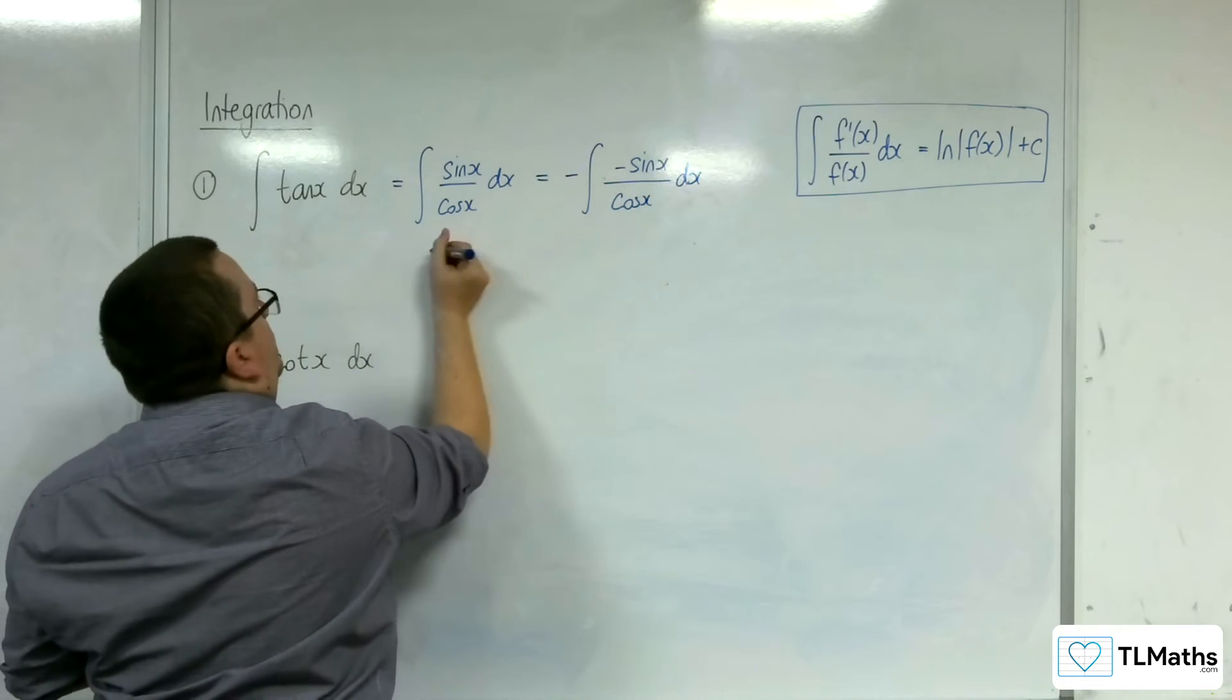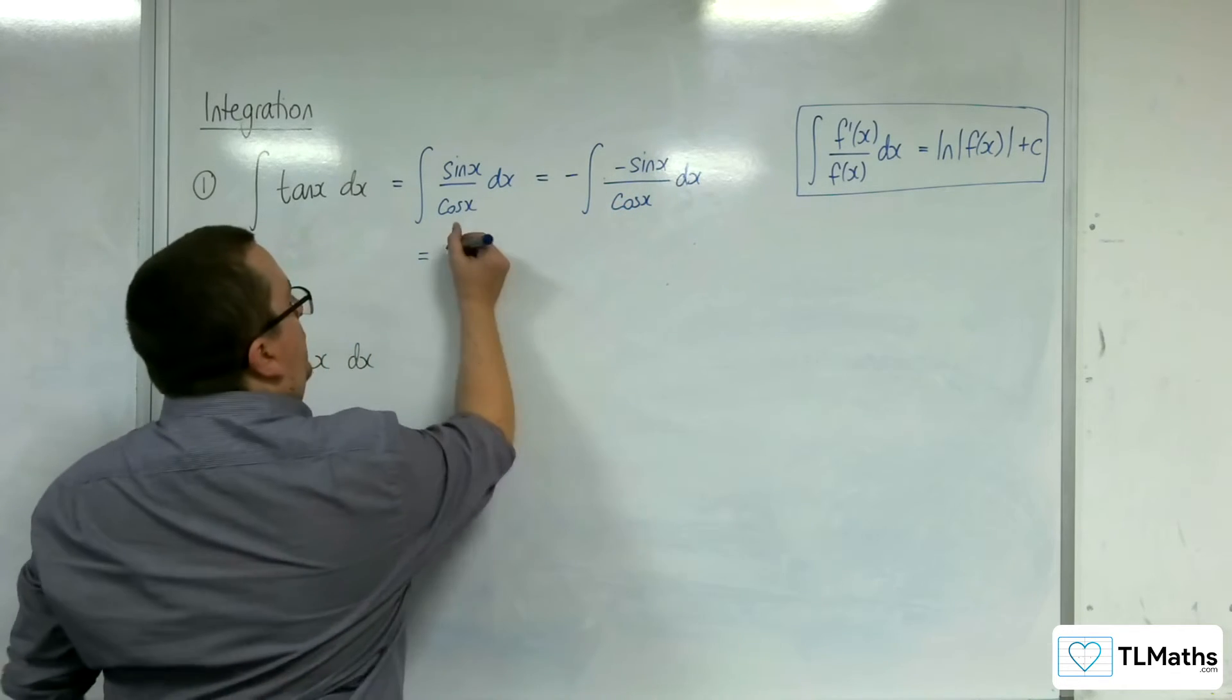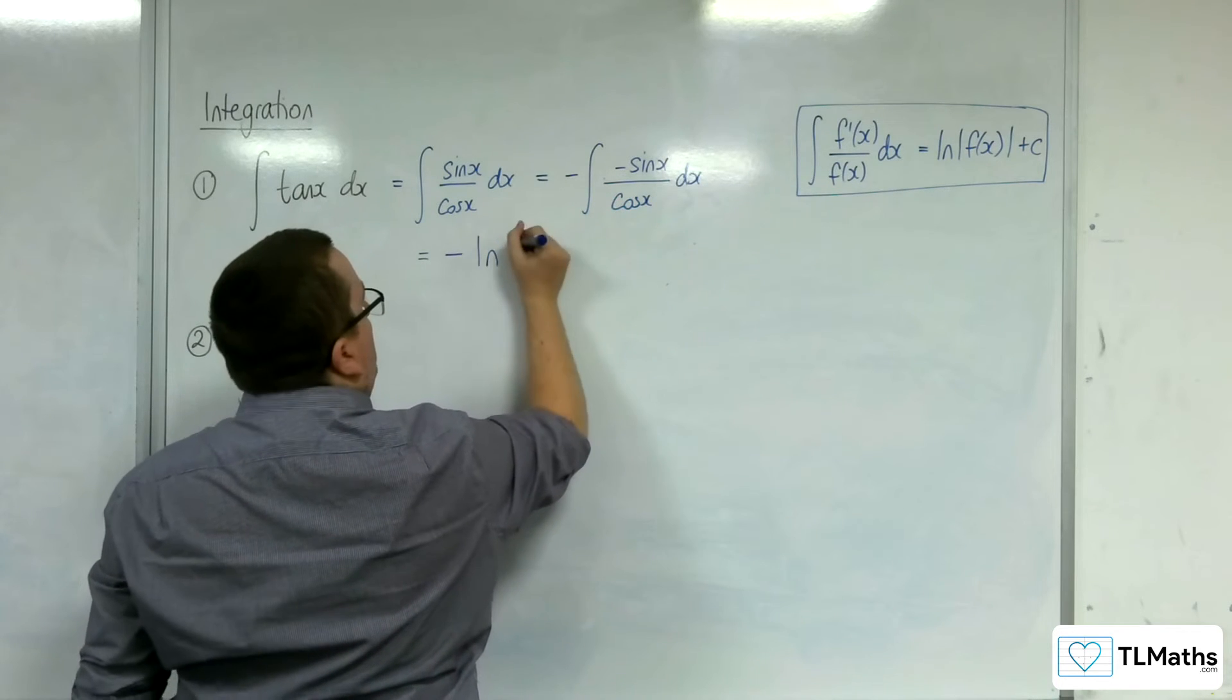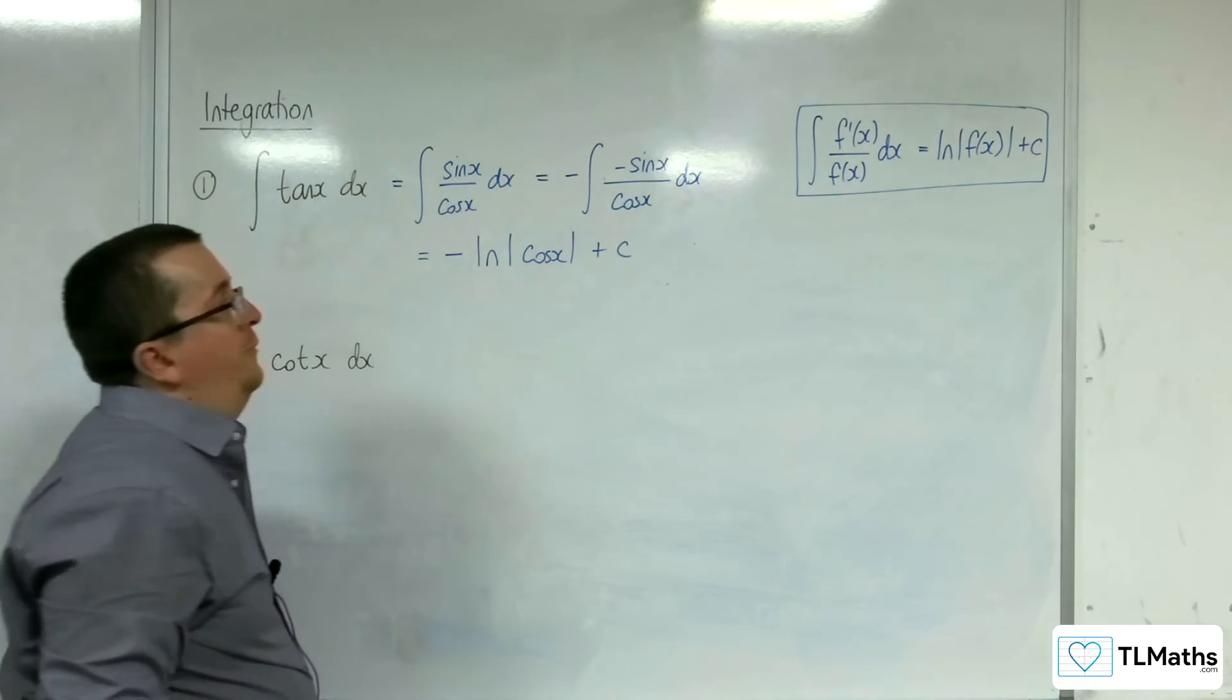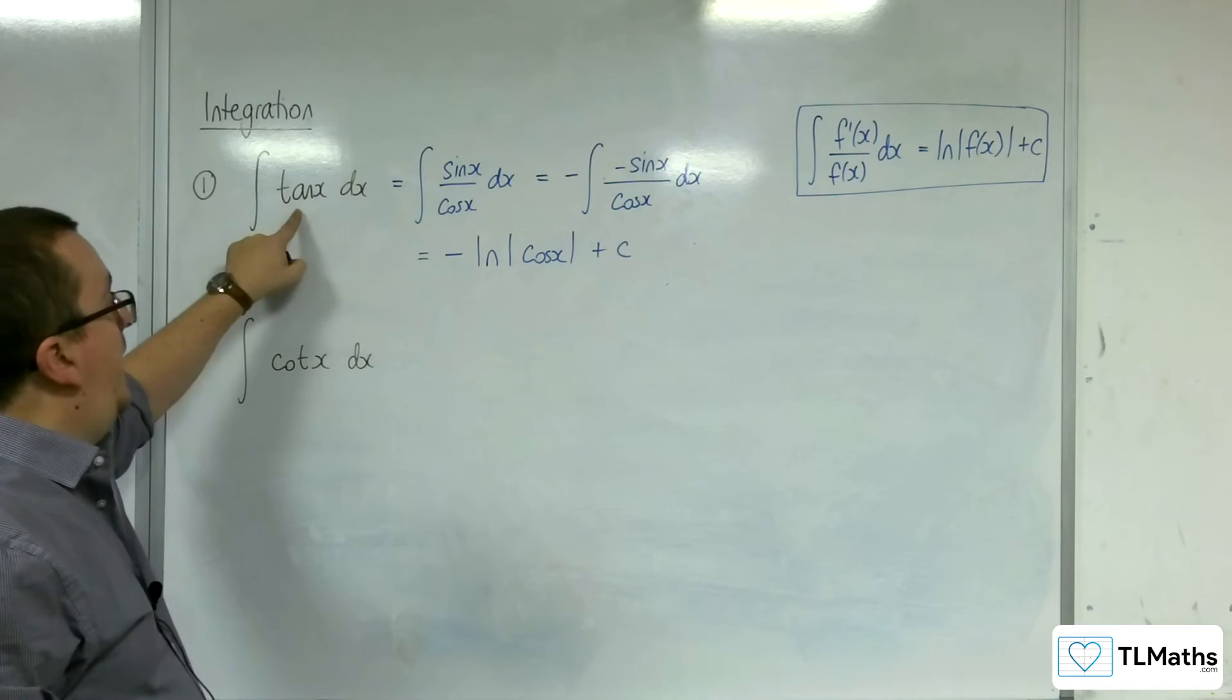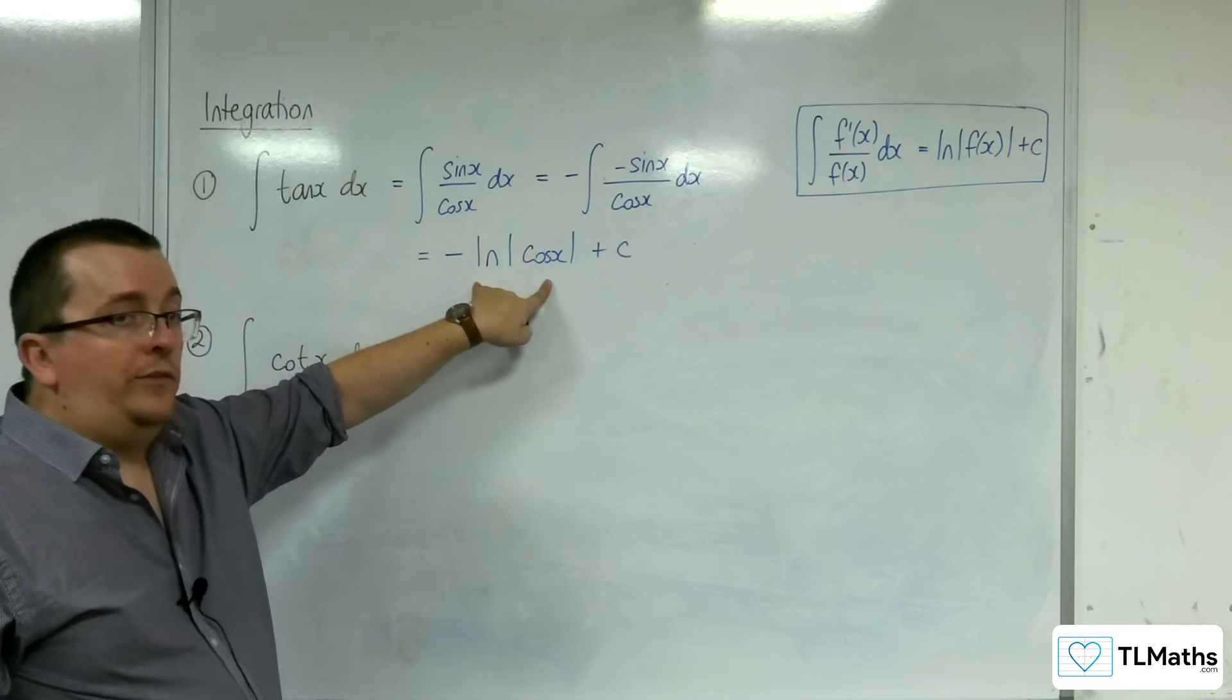So that now, the denominator differentiates perfectly to the numerator. And so we've got the negative of log of the modulus of cos x plus c. So the modulus of, log of the modulus of the denominator. And so tan integrates to negative log mod cos x plus c.